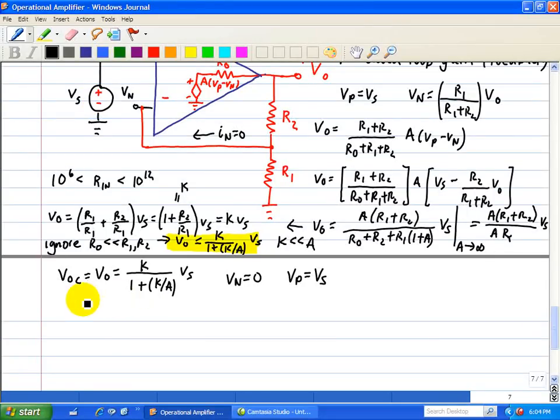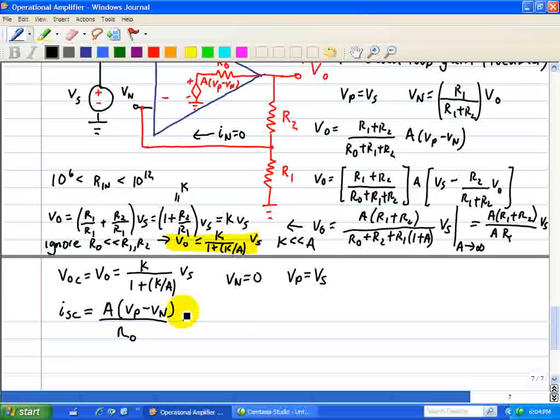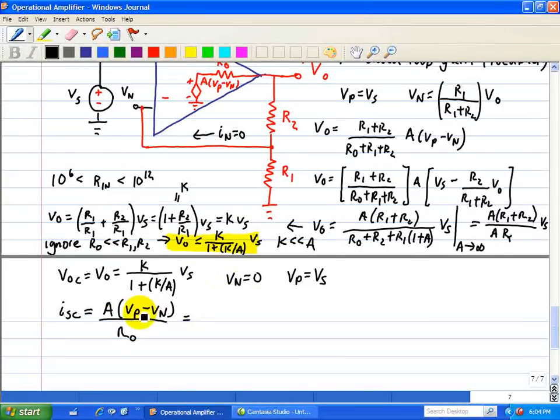And therefore, the short circuit current ISC is simply A times VP minus VN divided by RO. Now we substitute VN equal to 0 and VP equal to VS, and that yields AVS over RO.